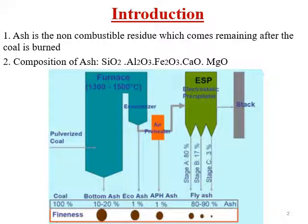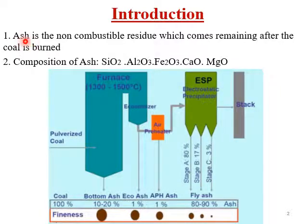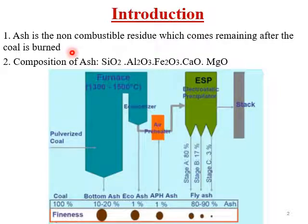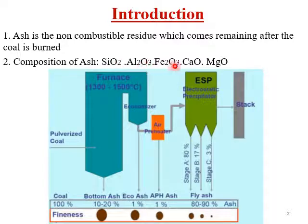This slide shows the introduction about the ash handling system. Ash is the non-combustible residue which remains after coal is burned. In the ashes there are components like silicon oxide, aluminum oxide, ferrous oxide, calcium oxide, and magnesium oxide.